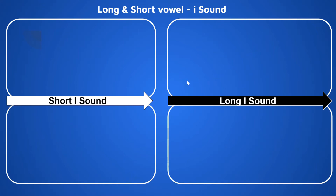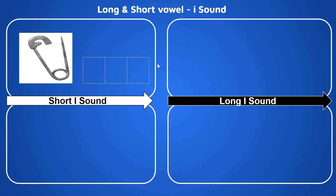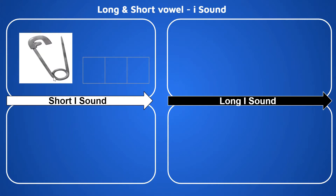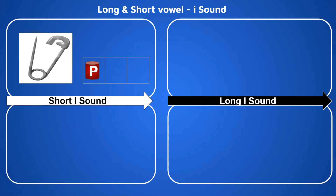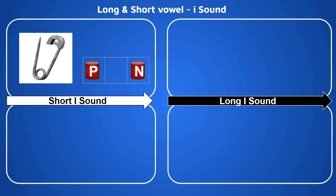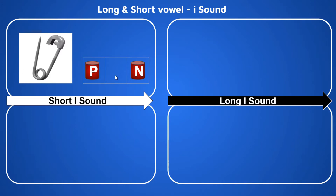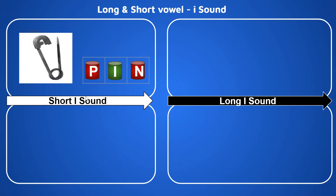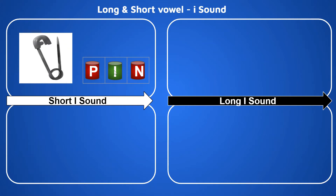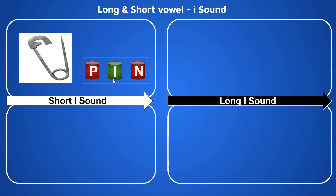Now let's try some examples. What is the beginning sound of 'pin'? It is P. What is the end sound of 'pin'? It is N. So the middle sound is E. E is the short sound of alphabet I, because I says E — the phonic sound of I is E.